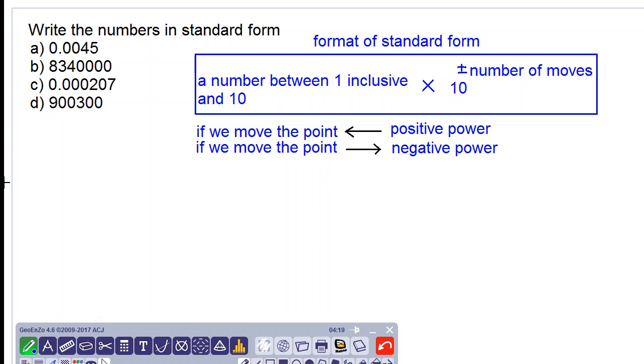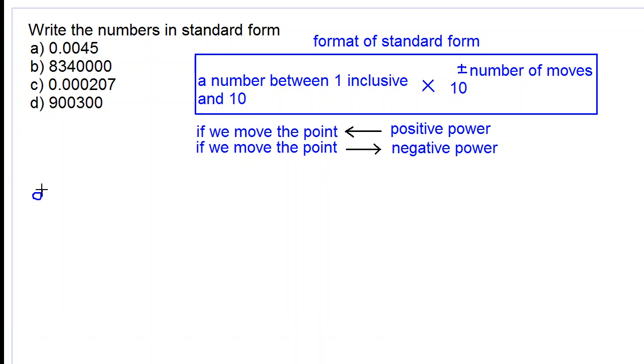Okay, so let's start with number 1. We want to move the point until we get a number between 1 and 10. So we get 4.5 multiplied by 10. We always multiply by 10. Count how many digits we had to jump over: 1, 2, 3.